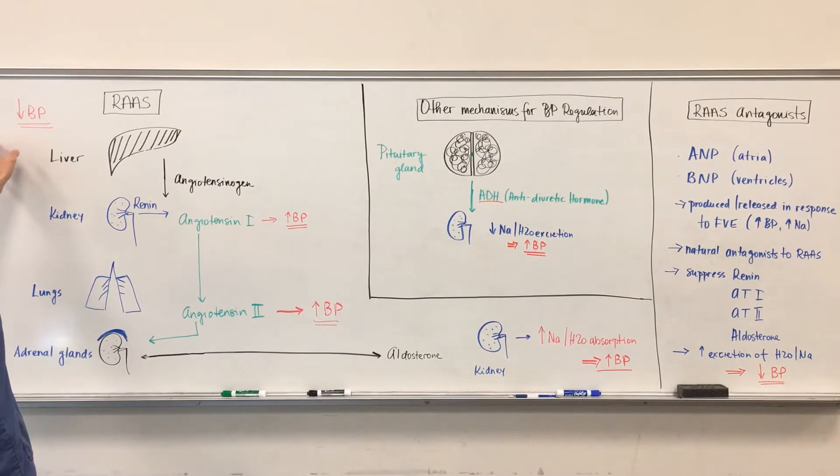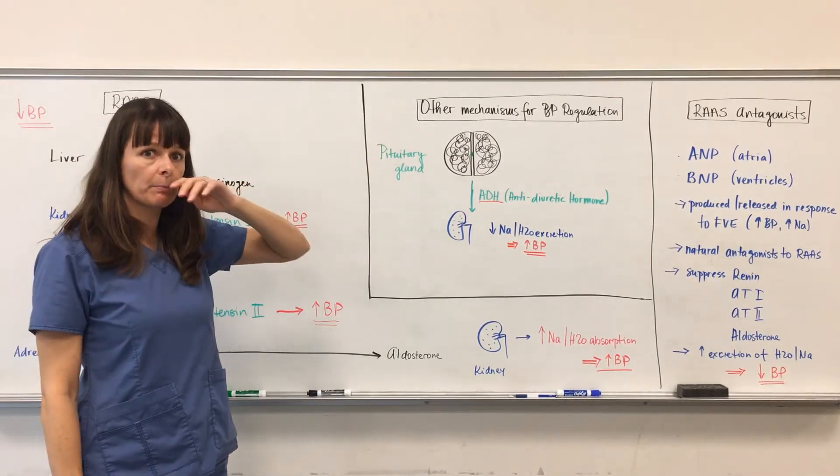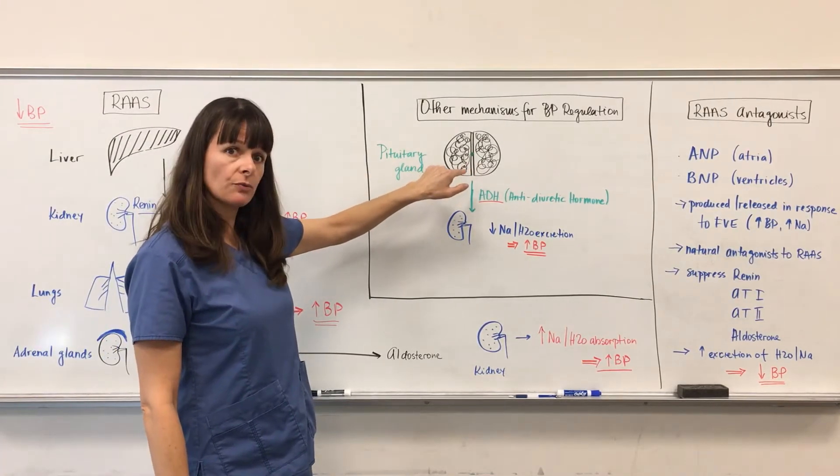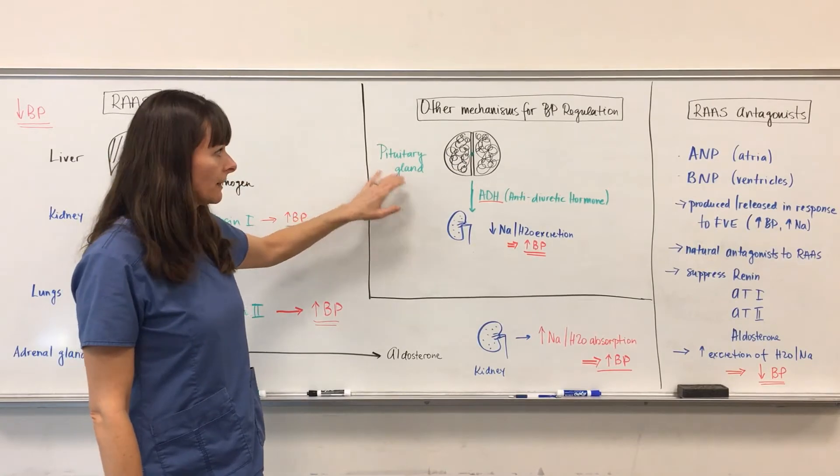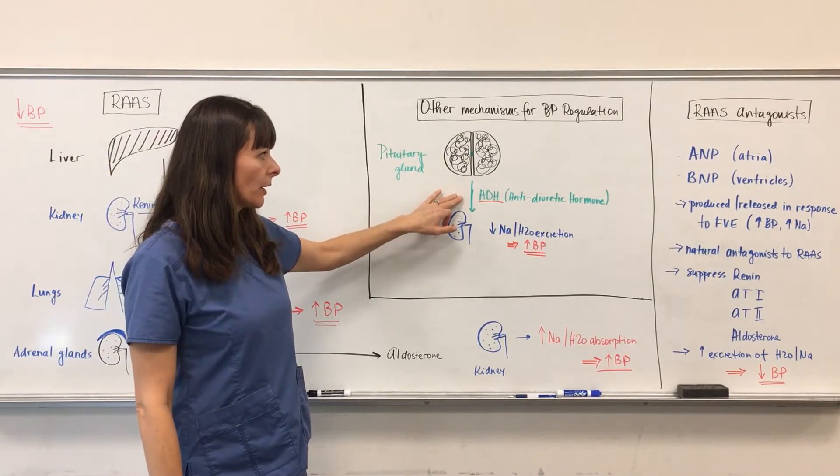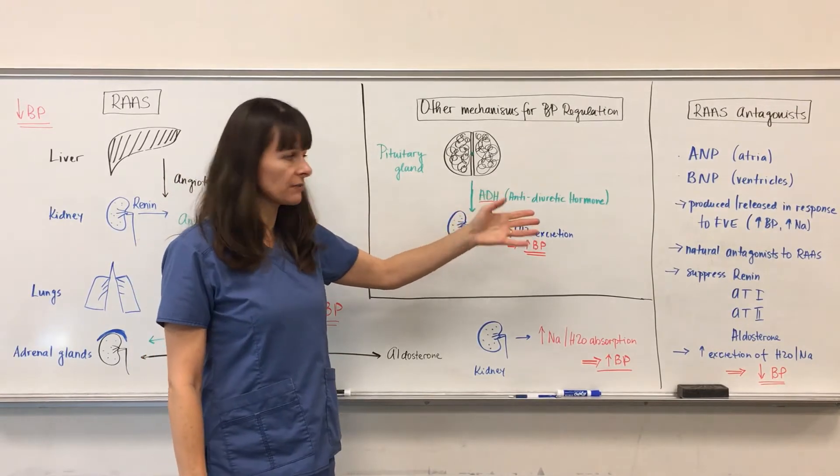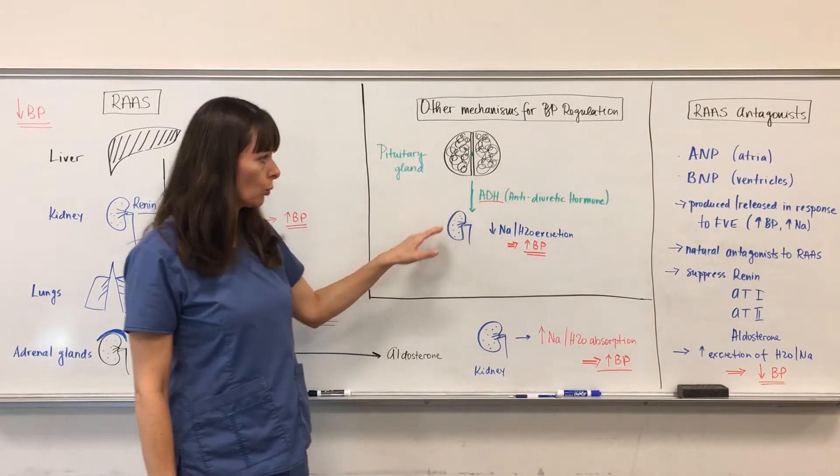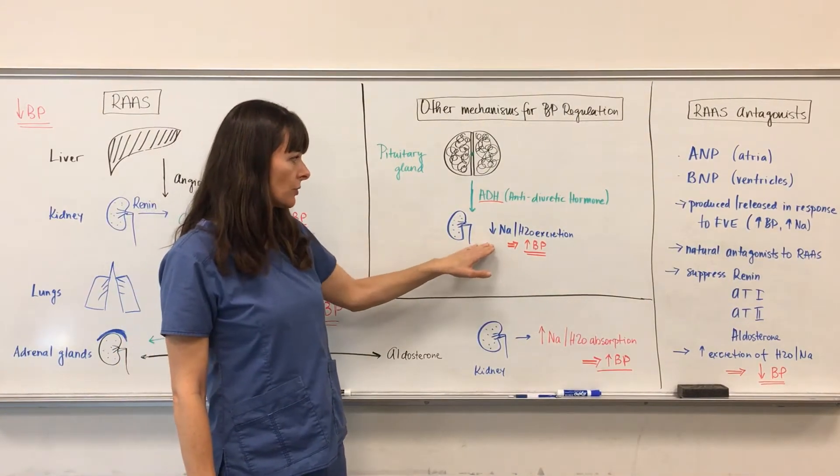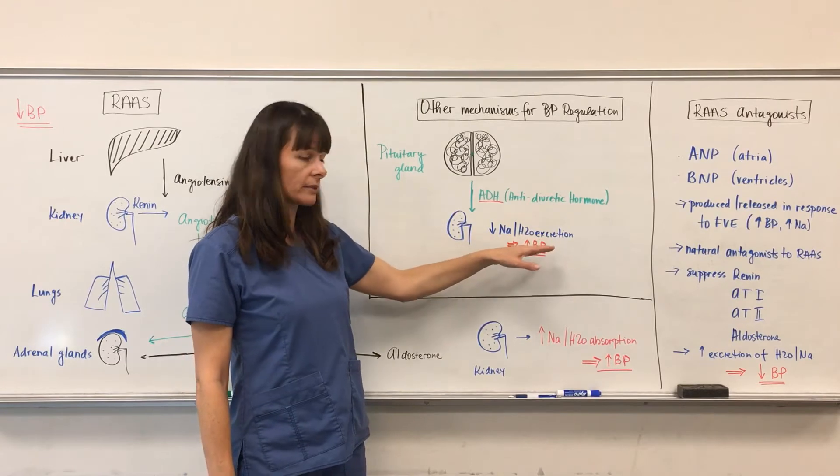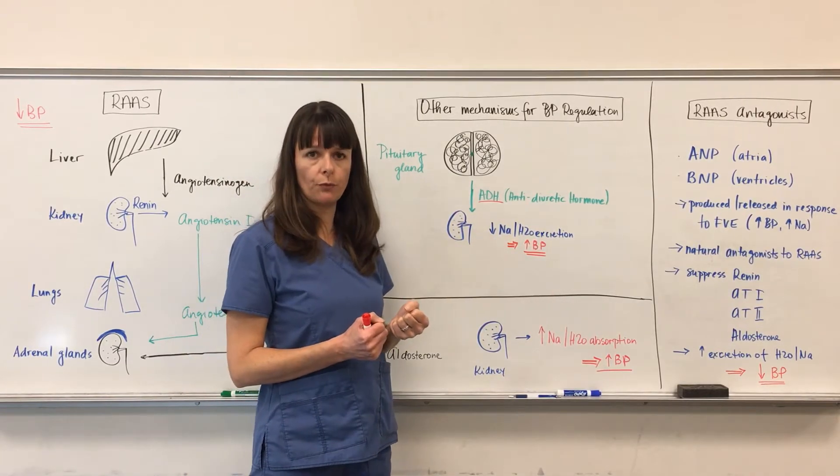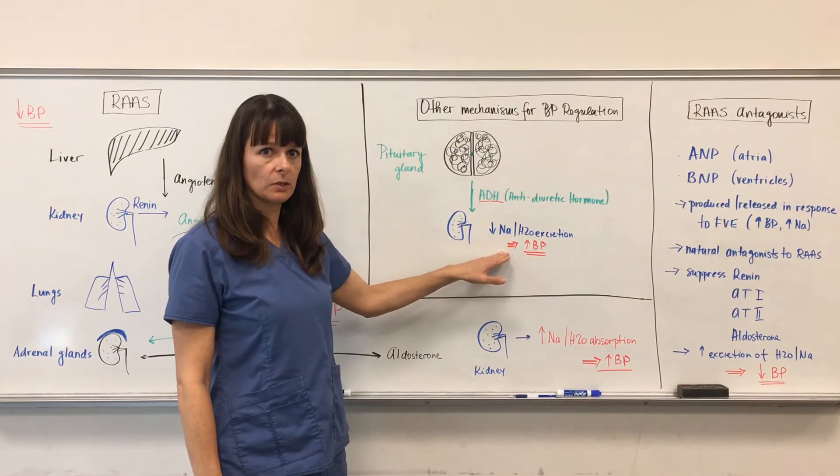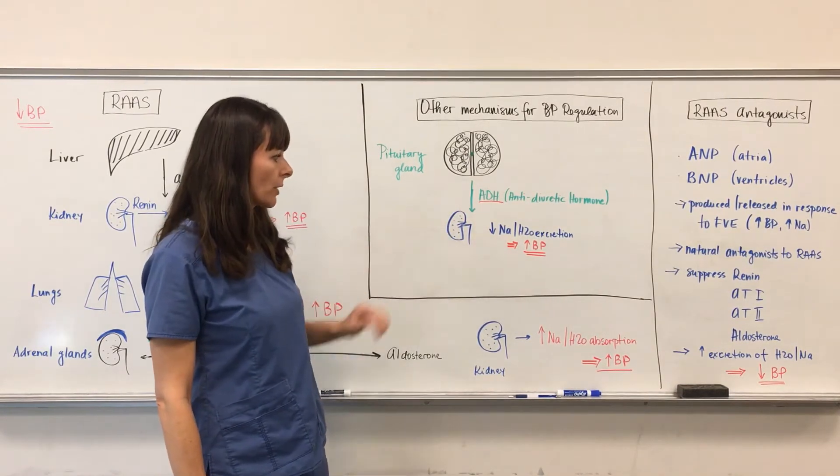Now besides the RAS, we also have other mechanisms that help us regulate blood pressure. Inside our two cerebral hemispheres, we have the pituitary gland that releases anti-diuretic hormone, which the name kind of gives it away - it's anti-diuresis. So what it does, ADH works on the kidney and it decreases sodium and water excretion, therefore holding on to more fluid in the intravascular space, and blood pressure is increased.